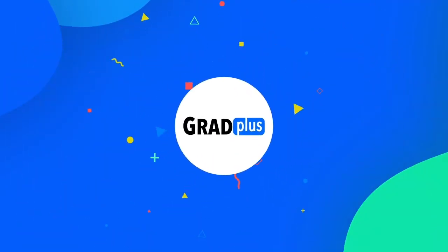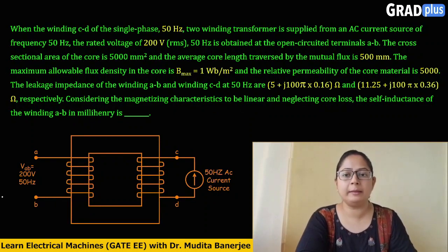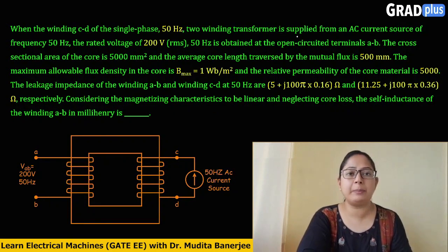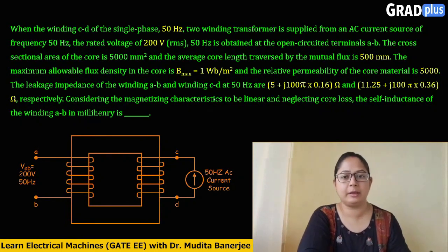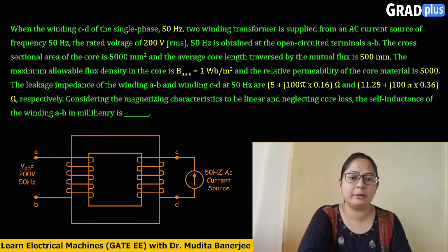Hello everyone. In this video we will solve a numerical problem which was asked in GATE 2023 electrical engineering, from the subject of electrical machines — single-phase transformer. The problem says: when winding CD of a single-phase 50 Hz two-winding transformer is supplied from an AC current source of frequency 50 Hz, a rated voltage of 200 volts at 50 Hz is obtained at the open-circuited terminals AB.